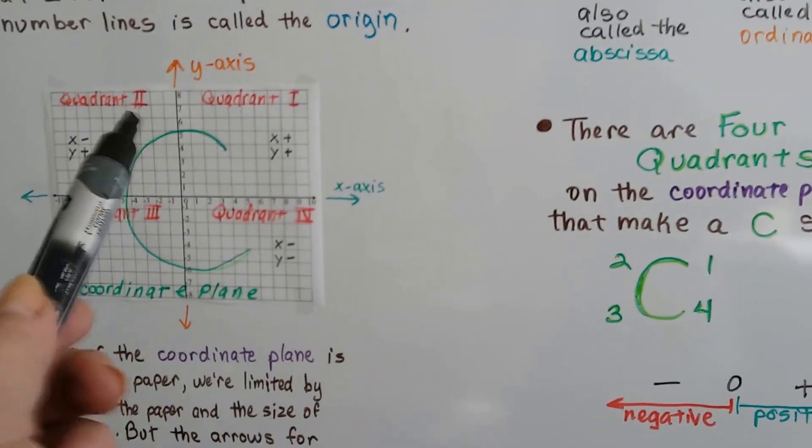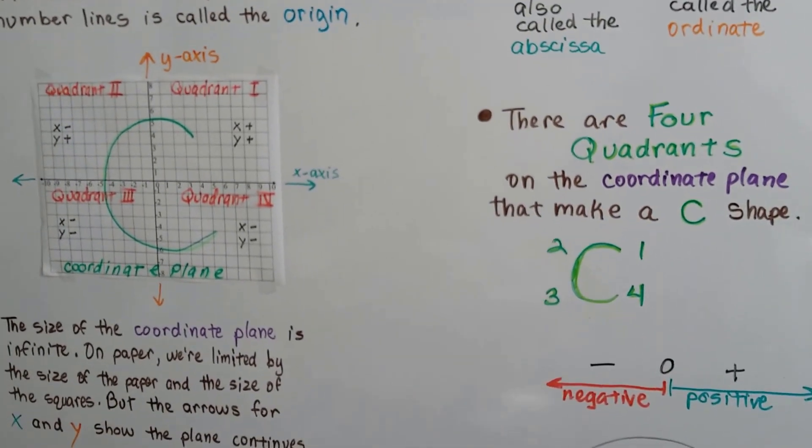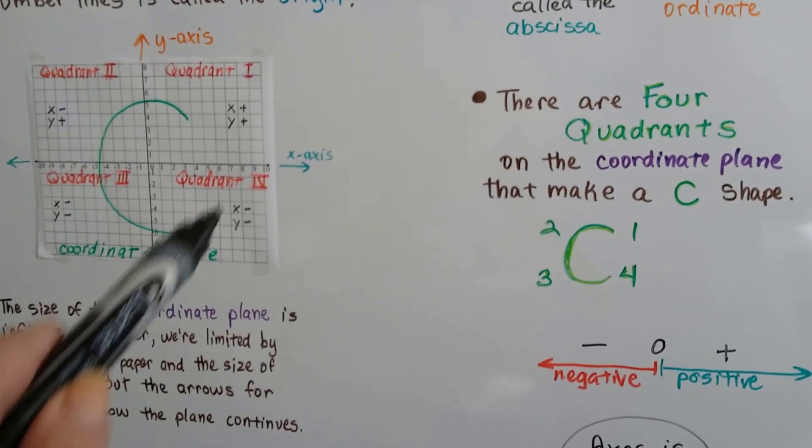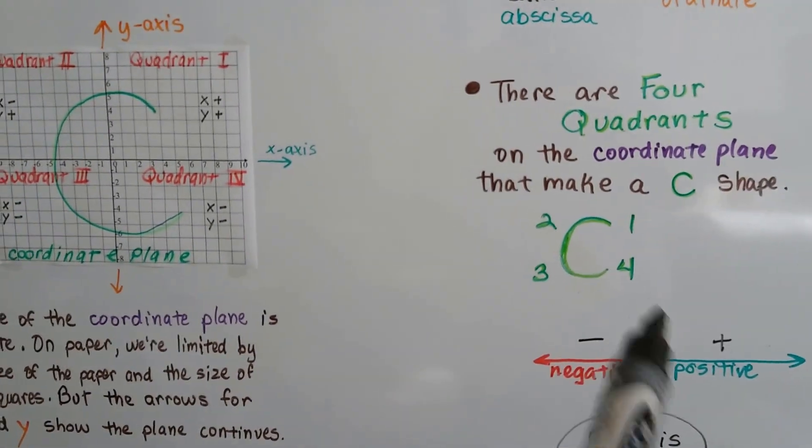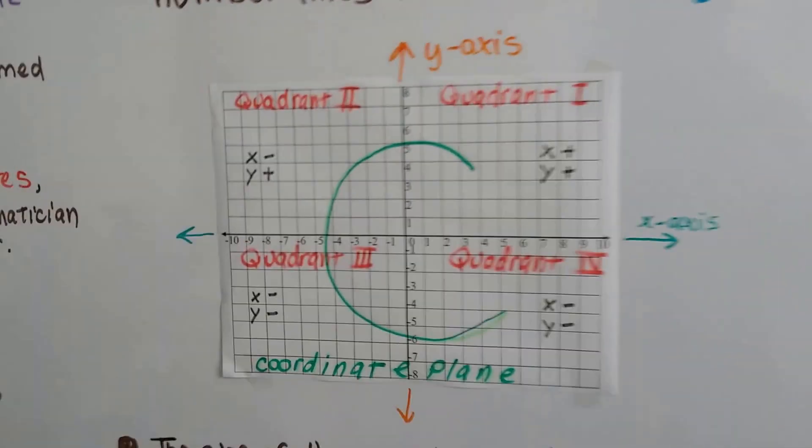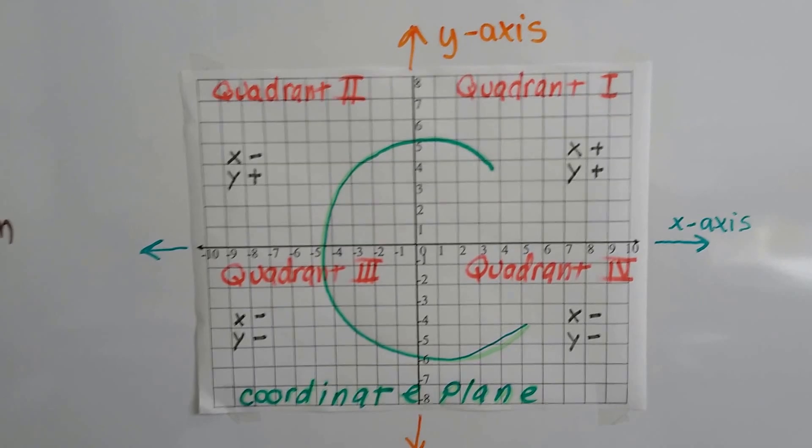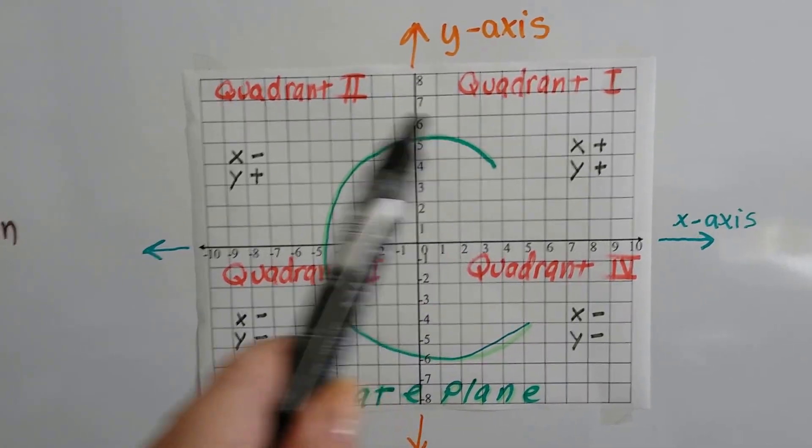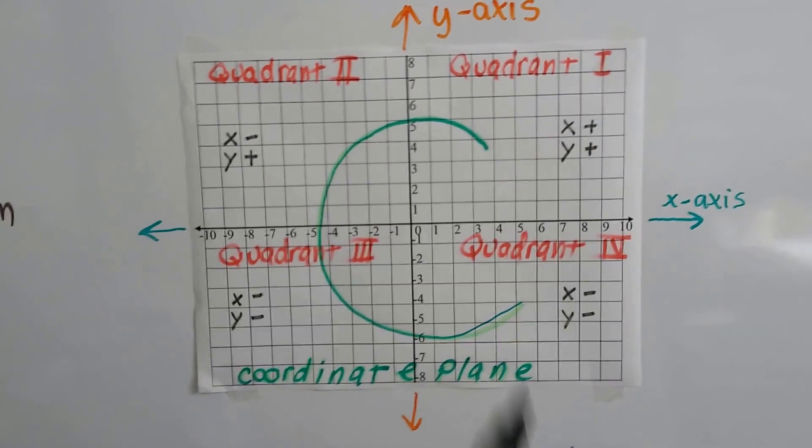If you look, you see these red words, this quadrant. There are four quadrants on the coordinate plane and they make the shape of a C. It goes 1, 2, 3, 4. A lot of people get confused and they think it starts here and goes 1, 2, 3, 4. Well, that would be a backward C. That's not how it goes. It goes in the shape of a C for the word coordinate. That's a good way to remember it.